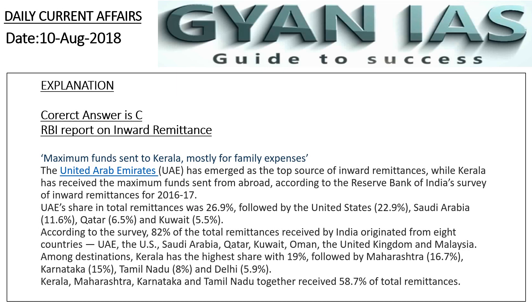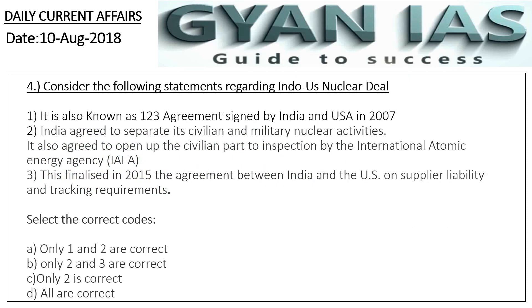Question 4: Consider the following statements regarding the Indo-US nuclear deal. Statement 1: It is also known as the 123 Agreement, signed by India and the USA in 2007. Statement 2: India agreed to separate civilian and nuclear activities and agreed to open up the civilian part to inspection by the IAEA. Statement 3: This finalized in 2015 the agreement between India and the US on supplier liability and tracking requirements.